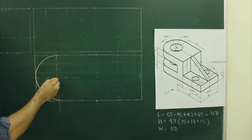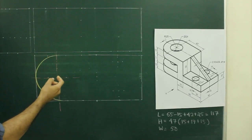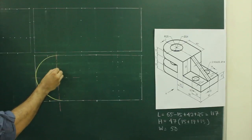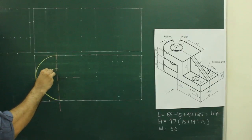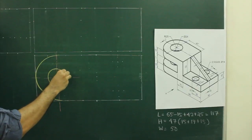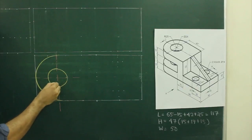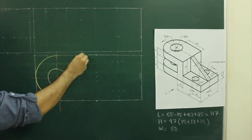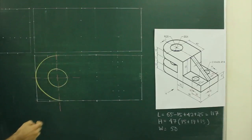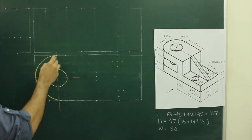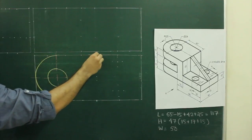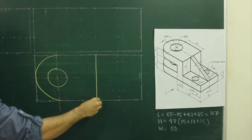Then they are given diameter 24, so radius will be 12. So you take 12 from here and we will draw a circle. After that, there will be 42, so you take 42 from here and draw a dark line. You take 42 from here and draw a straight line.